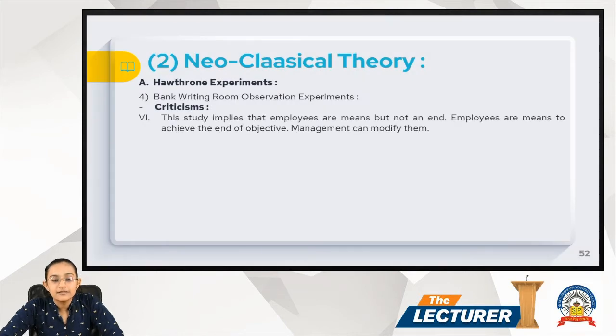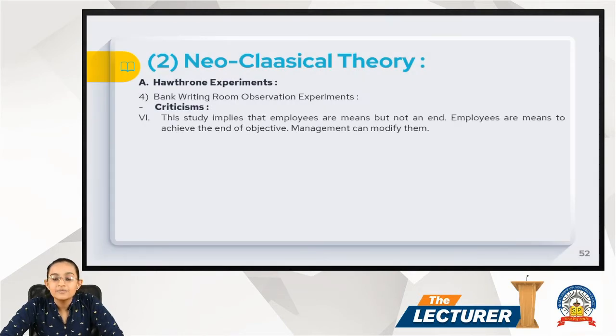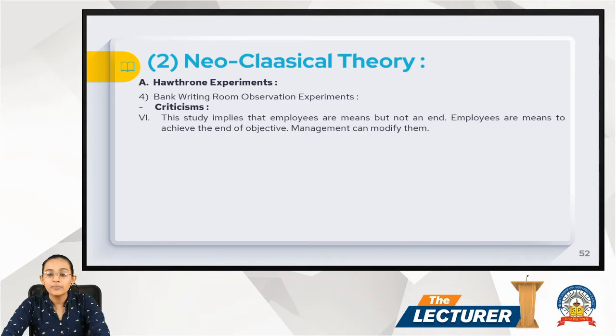This study implies that employees are means to achieve the end objective. Employees are means to achieve the end of the objective, and management can modify them.